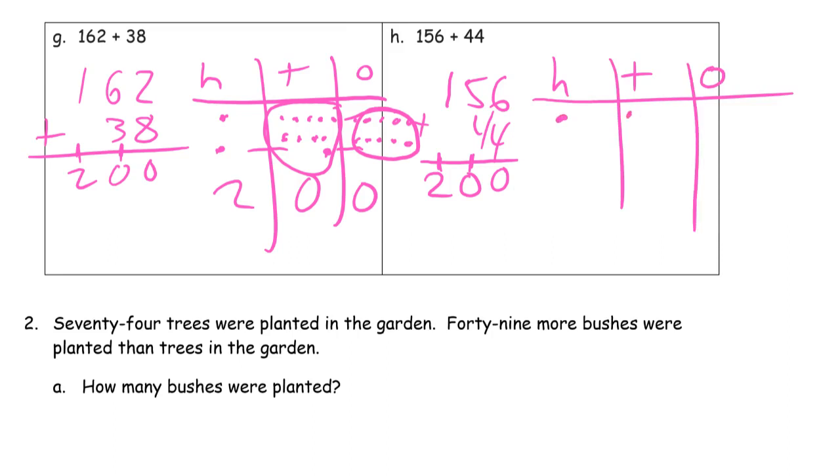So 156 is 1 hundred, 5 tens, and 6 ones. And now the 44 is 4 tens and 4 ones. There's your 10 ones making a 10. Now you have 10 tens, that makes another 100. You have 2 hundreds, 0 tens, and 0 ones.